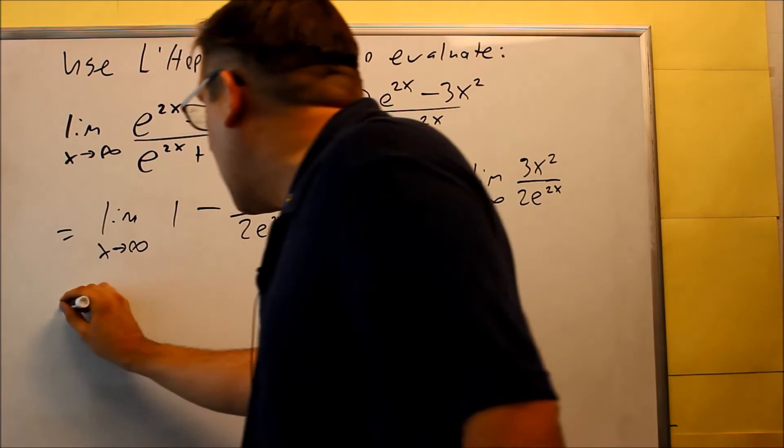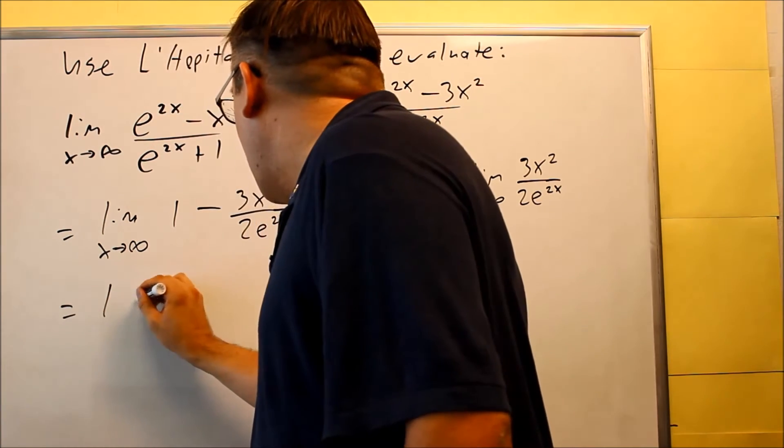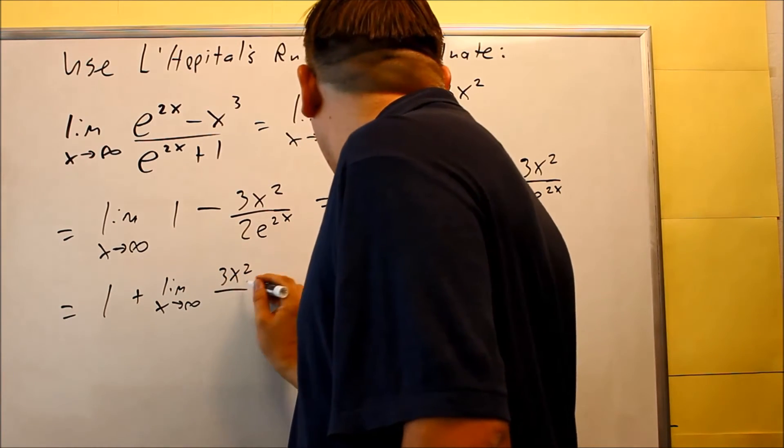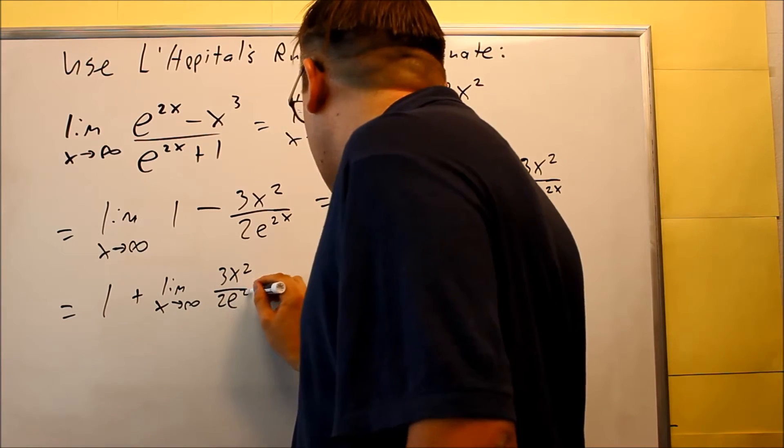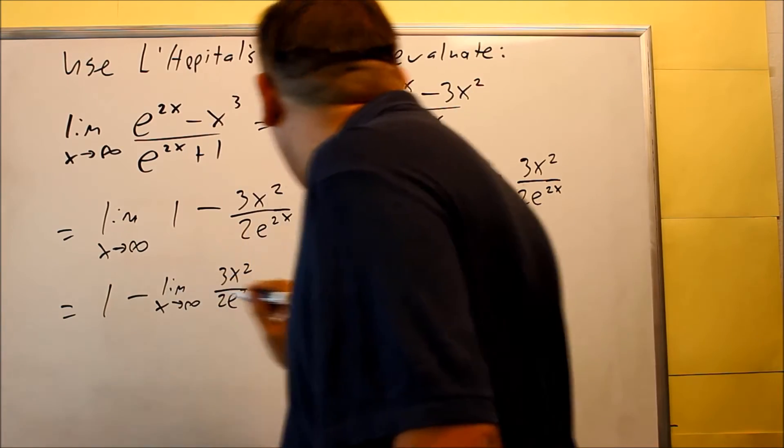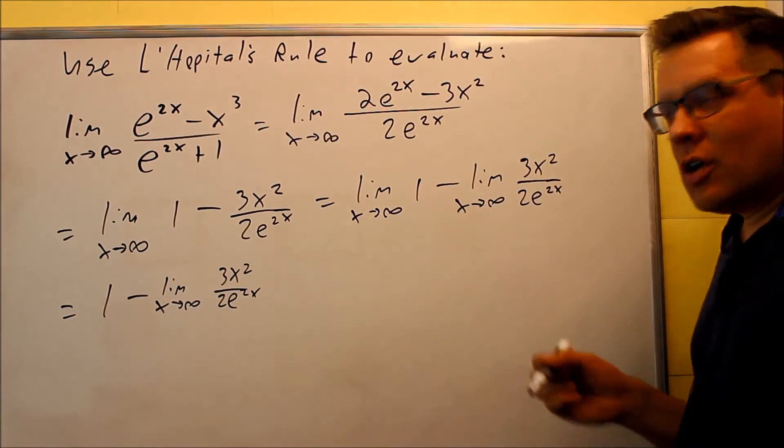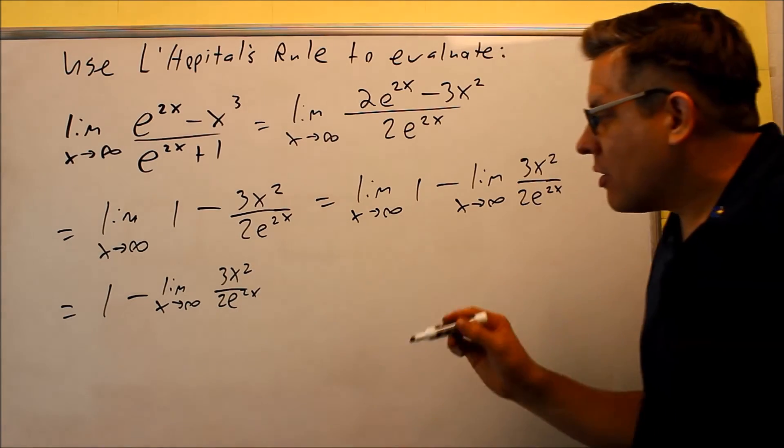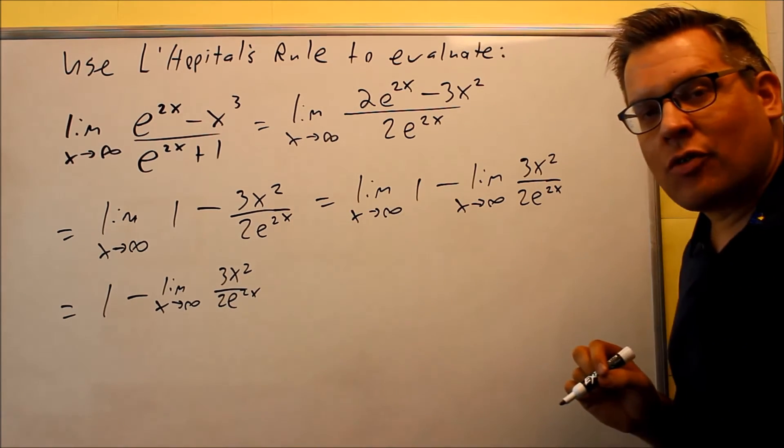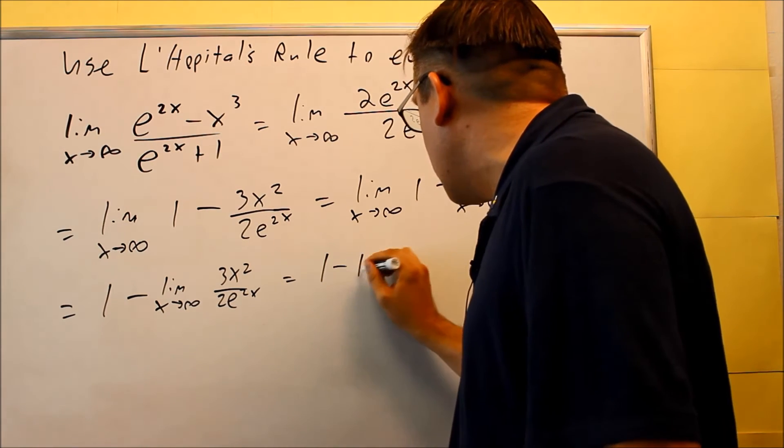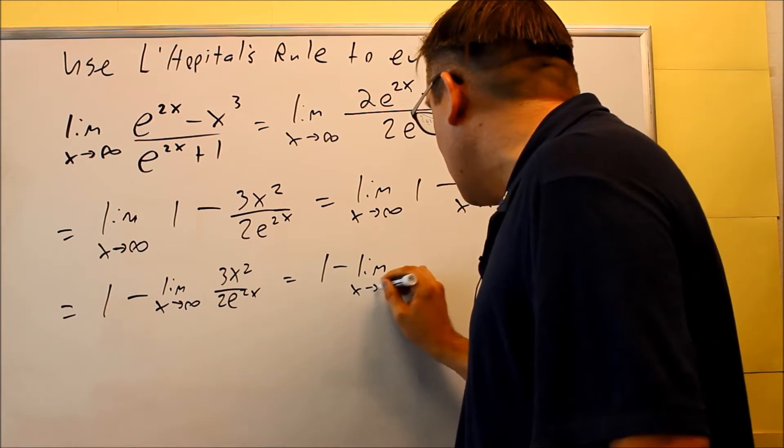So I know that I have now a 1 plus the limit x goes to infinity of 3x squared over 2e to 2x. And this is going to be a plus and minus here. Okay, so now I have this written down there. So we have a fraction part that's still going to give us infinity over infinity. So we're going to keep applying L'Hôpital's rule.